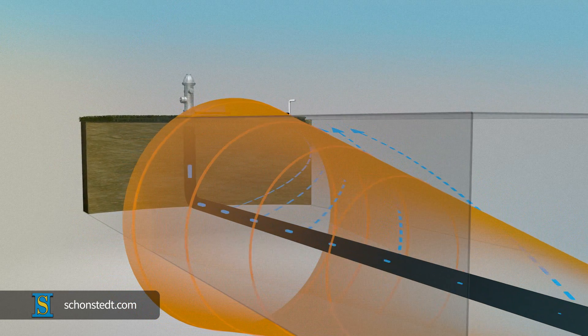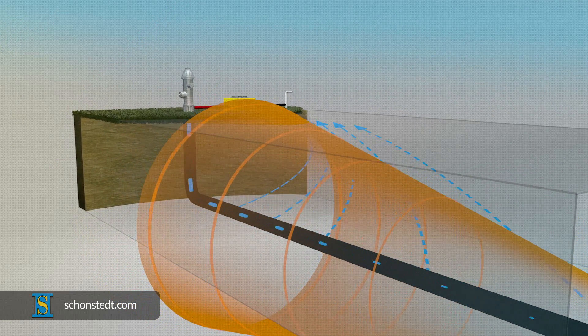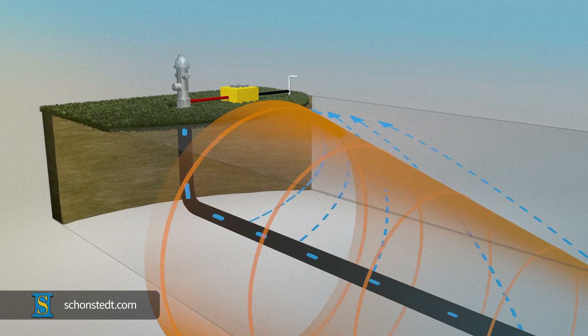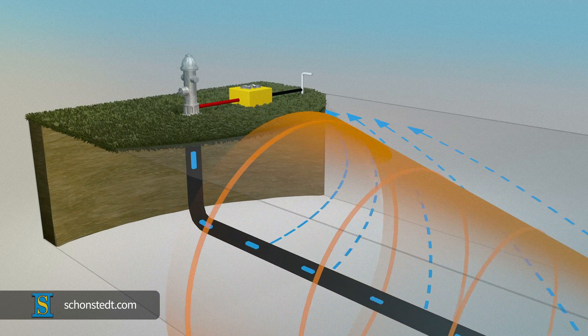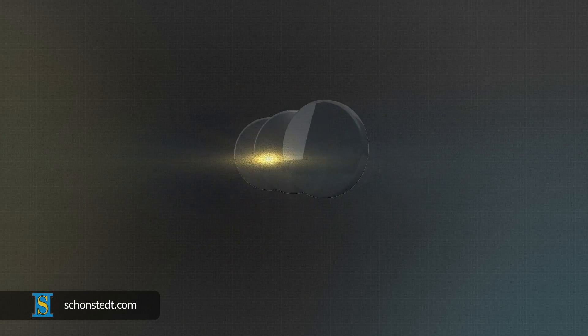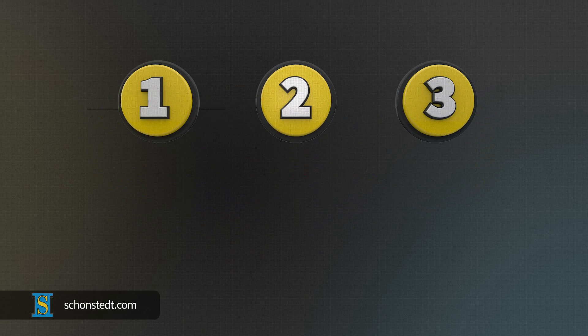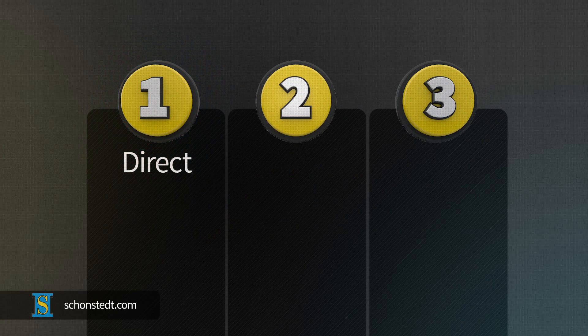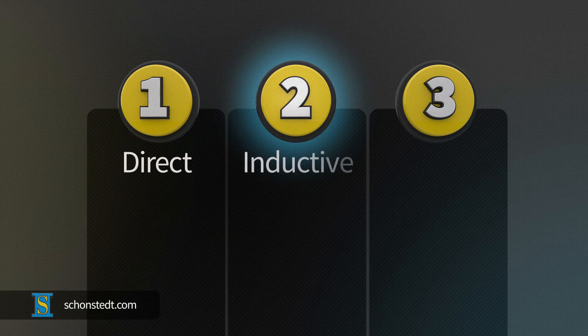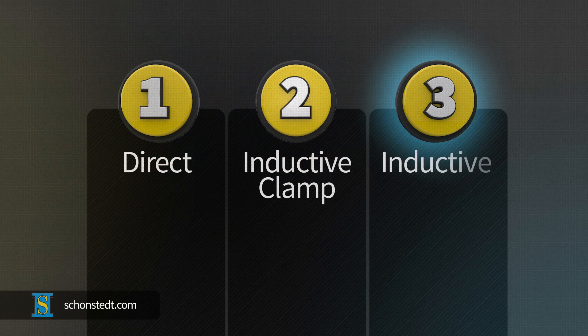Active locating requires you to create an electrical circuit through which current can flow. This can be accomplished with three different types of connections, known as active modes. The three active modes of connecting are direct, also known as conductive, inductive clamp, and inductive.